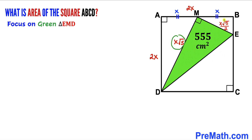Now let's focus on the green right triangle EMD, whose side lengths are X√5 and X√5/2, and whose area is given as 555. Recalling the area of a triangle formula — area equals one-half times base times height — the base is X√5 and the height is X√5/2. So: 555 = (1/2) × X√5 × (X√5/2). Since √5 × √5 = 5 and 2 × 2 = 4, this simplifies to 555 = 5X²/4.